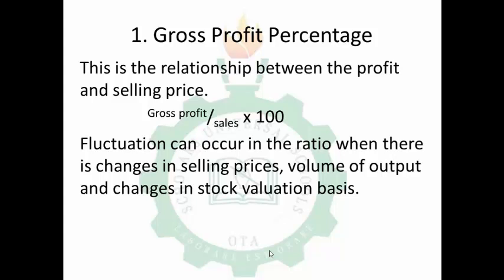I advise you to watch the video on stock valuation methods, where we discuss the methods a company can use to evaluate their stock. We have different methods such as FIFO (First In First Out) and LIFO (Last In First Out). The key reasons for changes in gross profit percentage are: selling price, volume of outputs, or changes in valuation basis.